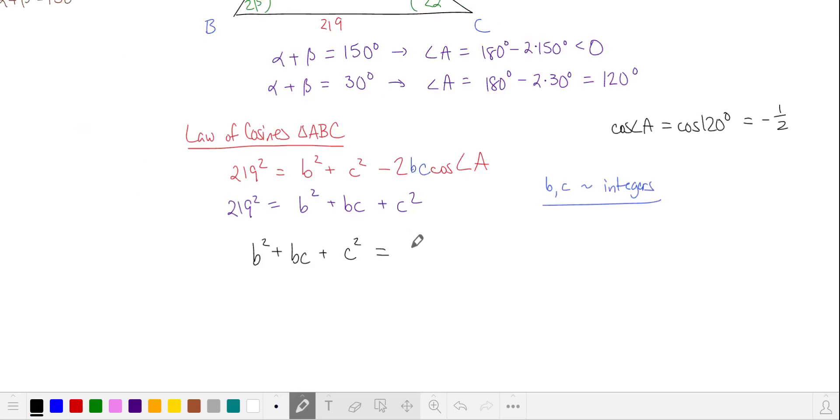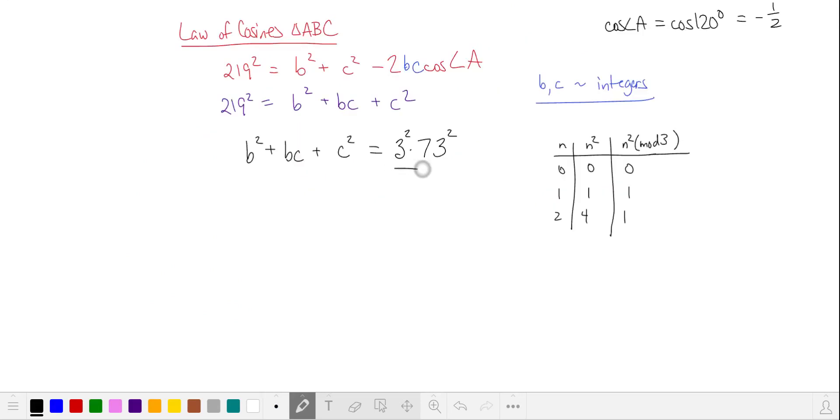The prime factorization of 219 is 3 times 73. Our right hand side is a multiple of 3. That's handy because there are only 2 mod 3 residuals for squared terms. Because we're taking the sum of 3 terms, one case could be that b and c and their product are all going to be multiples of 3. Another option is for all of our 3 terms to be equivalent to 1 in mod 3. That'll make their sum a multiple of 3.